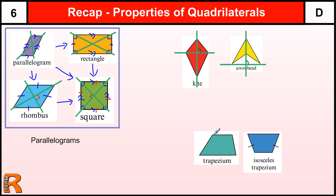Trapeziums: people often think of the isosceles trapezium as standard, which has one pair of parallel sides and one pair of equal-length sides. But the only definition of a trapezium is one pair of parallel sides — the lengths can be anything, so there are many shapes that qualify. A standard trapezium can have no lines of symmetry and no rotational symmetry. An isosceles trapezium will have one line of symmetry but no rotational symmetry. The diagonal lines of a trapezium do not cross at right angles. Those are all the properties of quadrilaterals commonly asked about in GCSE exams.